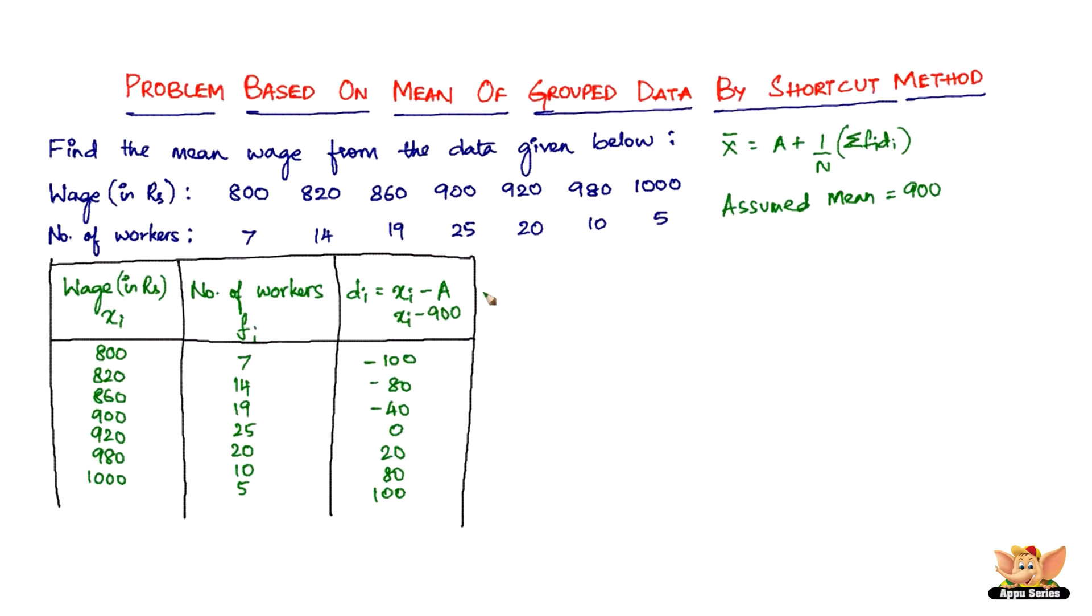The next one is the product of fi and di. So fi times di. Let me draw another column here. So 7 times minus 100, this is fi times di which is minus 700, then minus 1120, minus 760, 0, 400, 800, and then 500. We've got this.